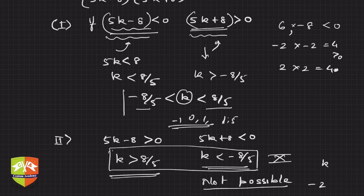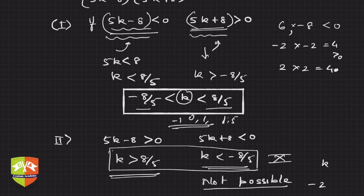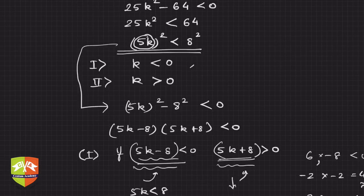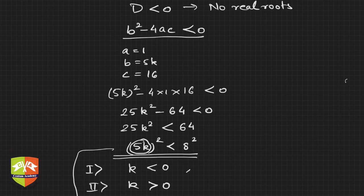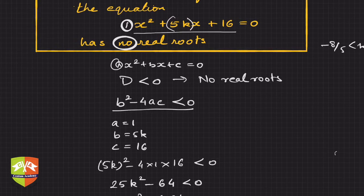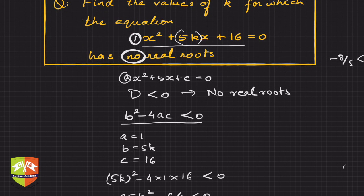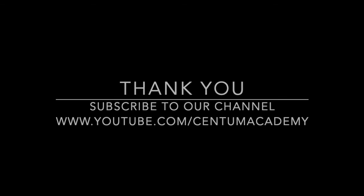Hence, any value of k between −8/5 and 8/5 will satisfy the condition that the given equation has no real roots. That's the complete solution to the problem.